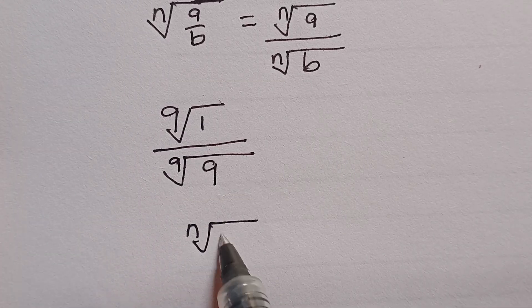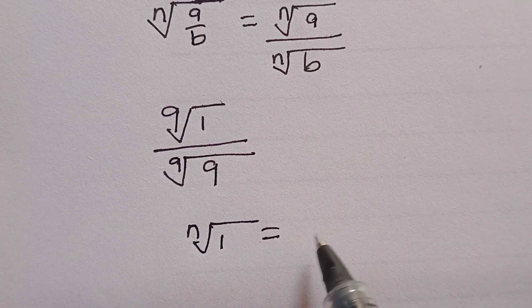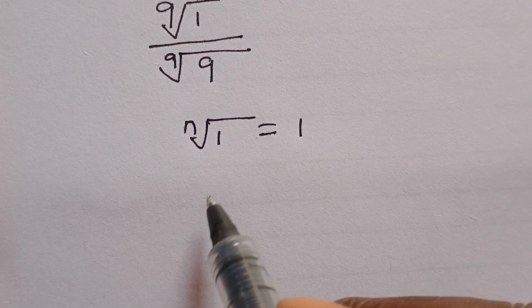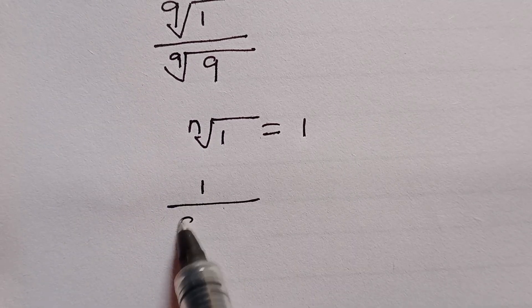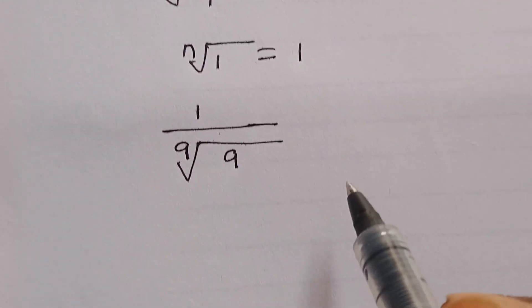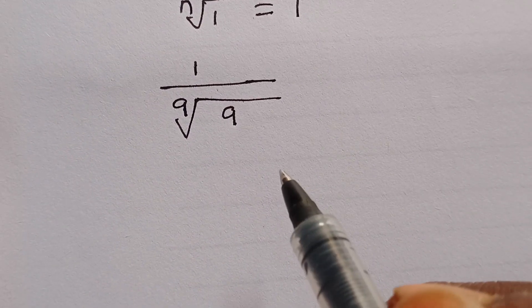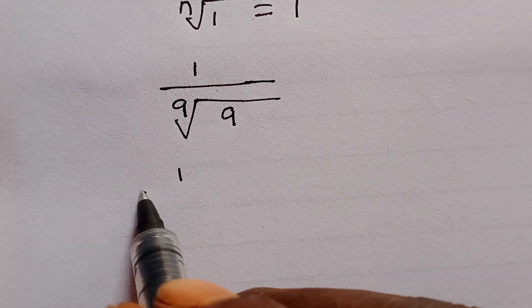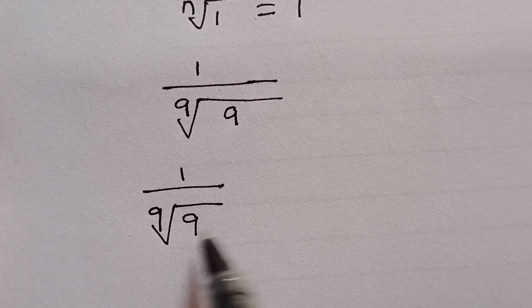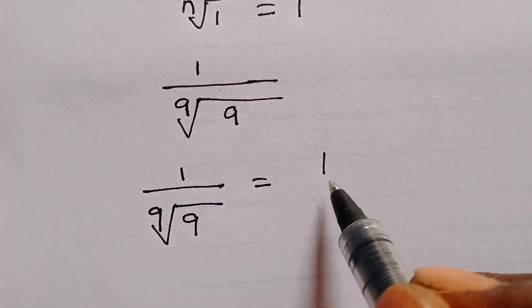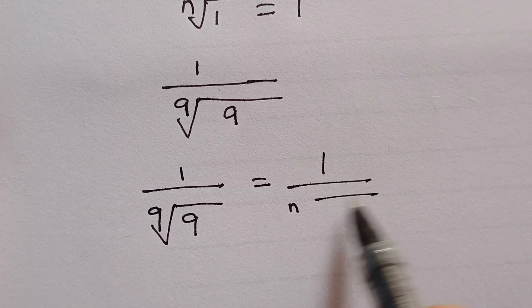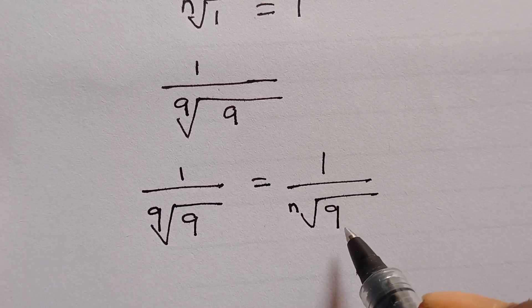From here, the nth root of 1 can simply be written as 1. So that gives us 1 divided by the 9th root of 9, following what we wrote earlier. This can simply be written as 1 divided by the 9th root of 9.